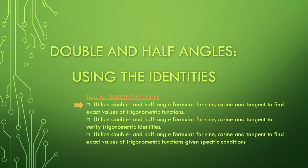How to use double and half angle identities. The double angle identities are really a special case of the sum identities, and then the half angle identities can be derived from the double angle identity.